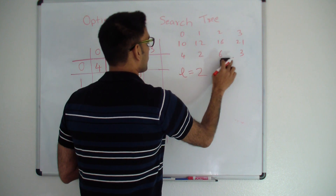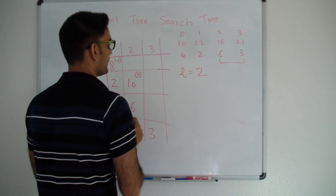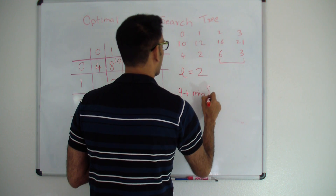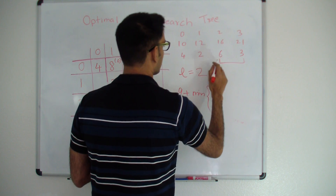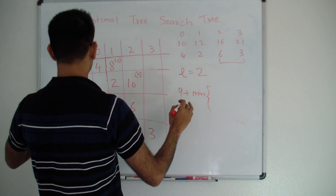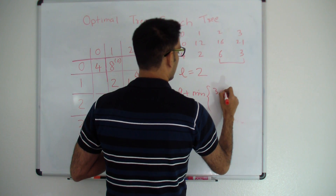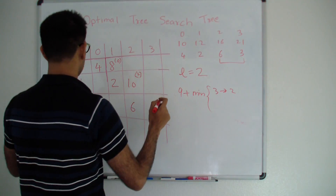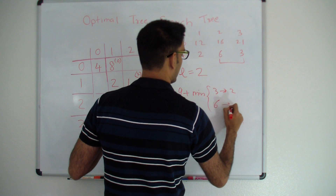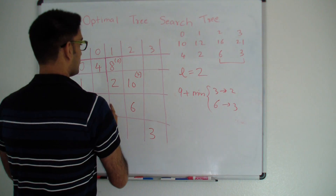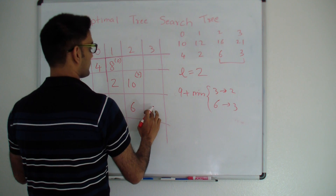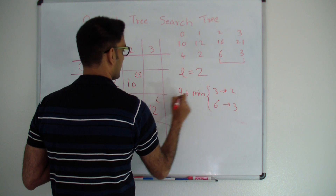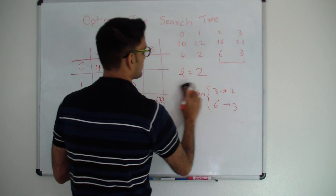Similarly for cell (2,3), the sum of frequencies is 6 plus 3 equals 9. Plus minimum of: if key 2 is the root, cost is whatever is at (3,3) which is 3; if key 3 is the root, cost is whatever is at (2,2) which is 6. We pick 3, so 9 plus 3 equals 12. Cell (2,3) is 12, with key 2 as root.